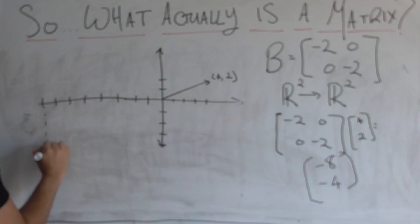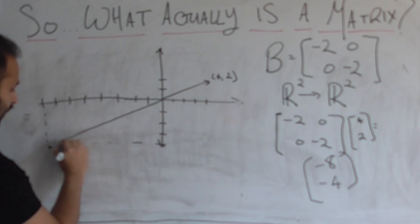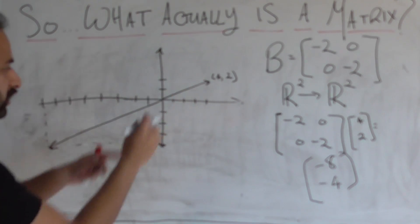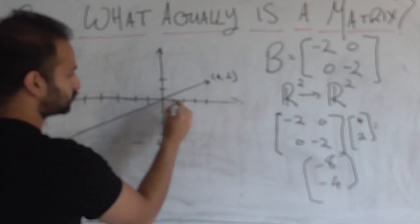So that vector looks like this. Now, how does that vector compare to that vector? Well, it's double the length, right? Basically, this one was four, two.